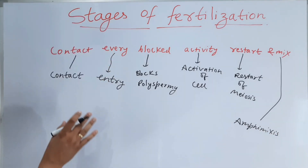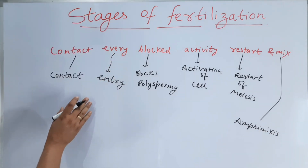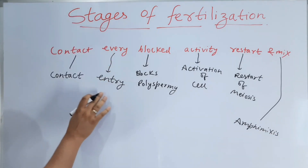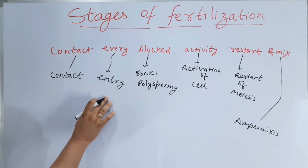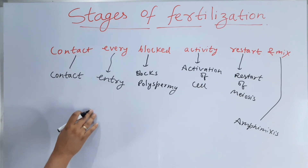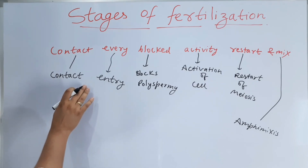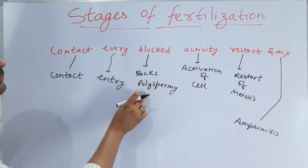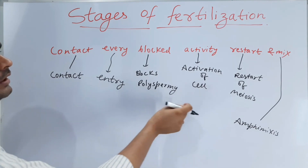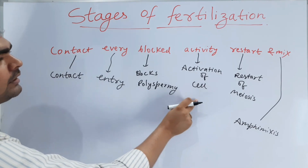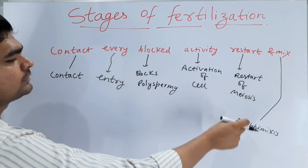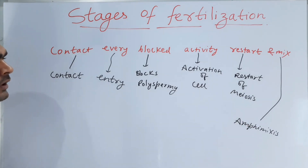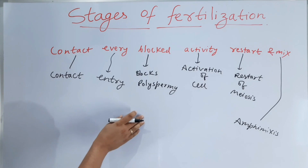This was the stage of fertilization made very easy for you all. The trick is: contact, every blocked activity, restart and mix — contact, then entry, then blocks polyspermy, activation of cell, restart of meiosis, and the gametes mix. Hope you like it.